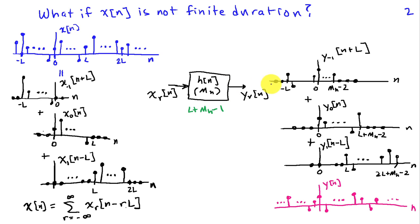Here I'm showing y_{-1}[n+L], which is what happens when I put x_{-1}[n+L] into h. It's going to start at -L, assuming h is a causal system, and go to m_h - 2. If I did my calculations right, this is a total of L + m_h - 1 non-zero values, zero outside that interval. If I take x_0 and put that in, I get y_0 going from indices 0 through L + m_h - 2. Then I take x_1 and get y_1, starting at L and going through 2L + m_h - 2, and so on.